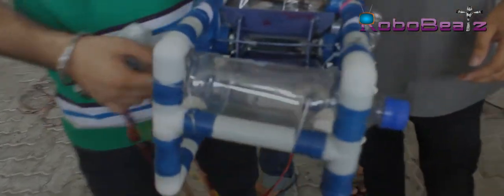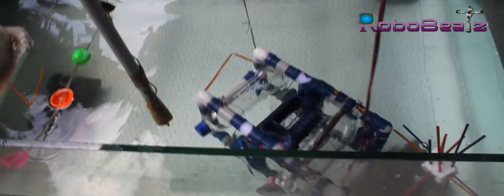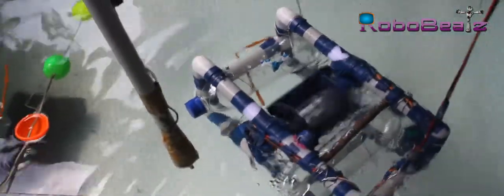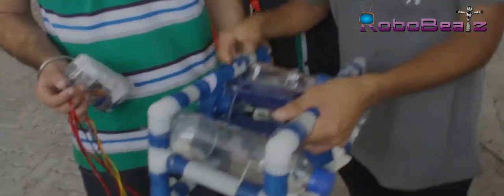For balancing, we have used bottles. These are small fans to move forward. For forward motion, this is the main one, and these are for forward.